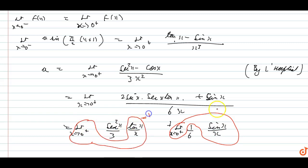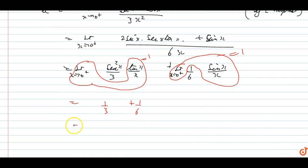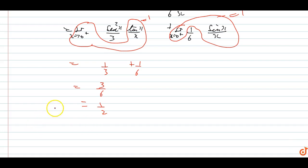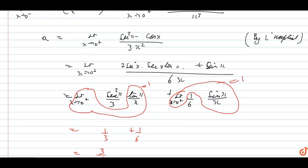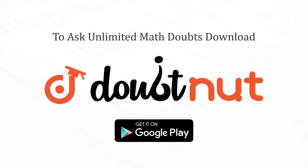Now we know the standard limits: limit x tends to 0 of sin x upon x equals 1, and limit x tends to 0 of tan x upon x equals 1. So substituting these, the right-hand limit becomes 1/3 plus 1/6, which equals 2/6 plus 1/6 equals 1/2. Therefore a equals 1/2, which is our answer.